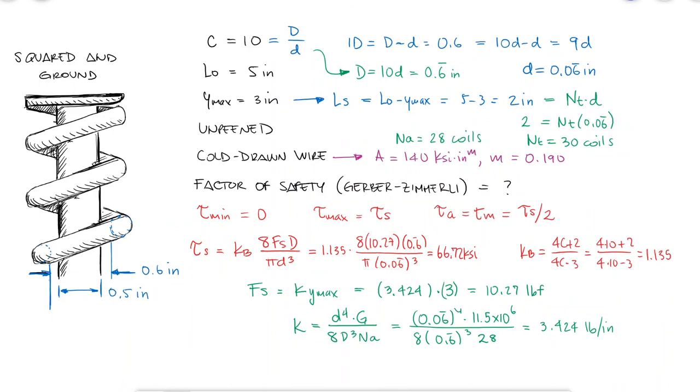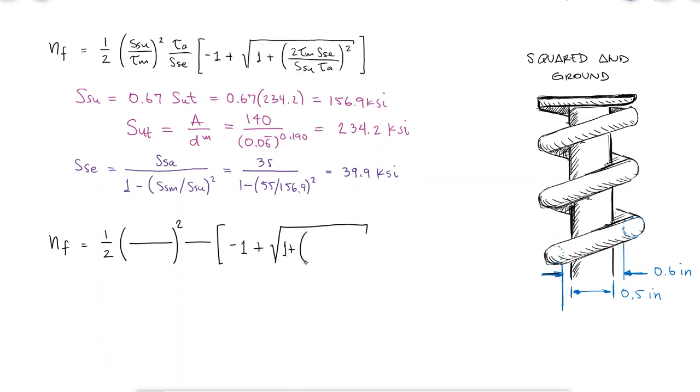The alternating and mean shearing stresses are therefore half of that value, and we now have everything we need to calculate the Gerber fatigue factor of safety.